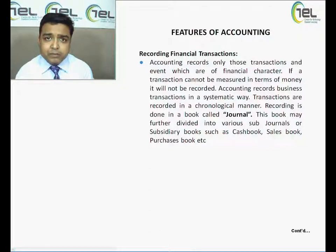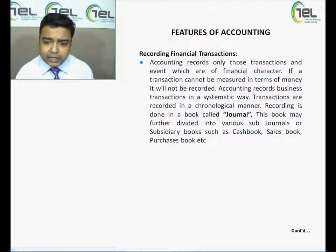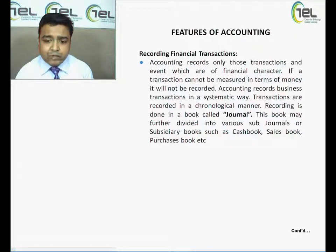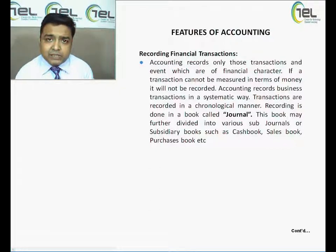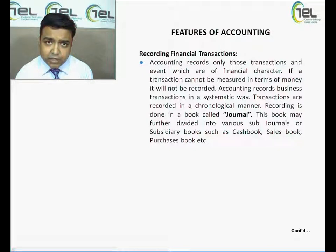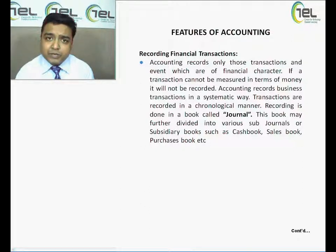Accounting records business transactions in a systematic manner using the proper language of debits and credits. Transactions are recorded in a chronological manner — that is, date-wise — starting from the first day and proceeding as the accounting period progresses. Recording is done in a book called the journal. This book may further be subdivided into various sub-journals or subsidiary books, like the cash book, sales book, purchase book, etc. If transactions are fewer, a single journal may suffice; if numerous, the journal can be subdivided into various books.